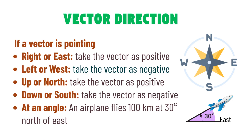Here's an important rule when working with vectors: the signs matter. Think of it like this — if the vector points right or east, call it positive; if it points left or west, call it negative. If it points up or north, that's positive; if it points down or south, that's negative.